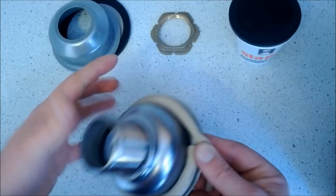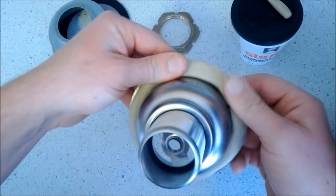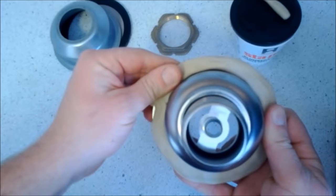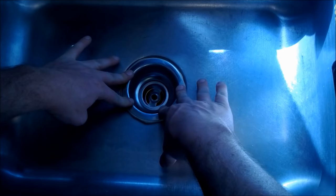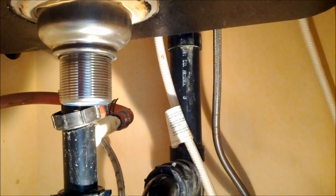Now that we have the plumber's putty on the sink basket, we'll go ahead and use our thumbs. Go all the way around, pushing the plumber's putty up against the sink basket. Now that we have the plumber's putty pushed up against the sink basket, we'll go ahead and sit the sink basket inside the sink. We'll center it and push it down.